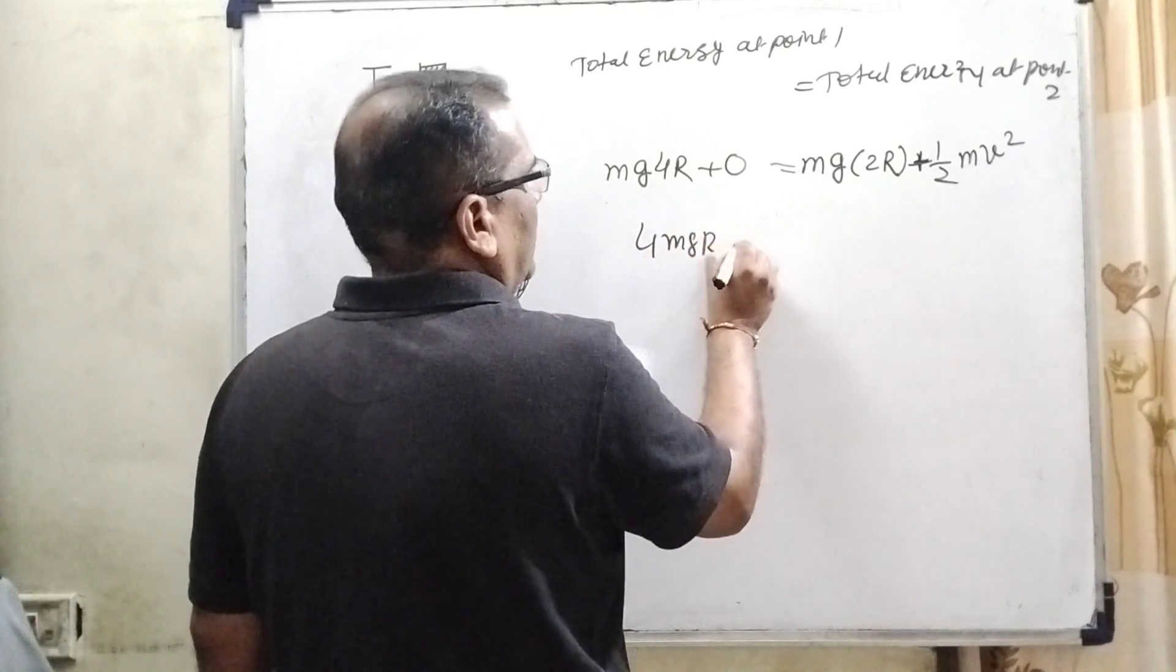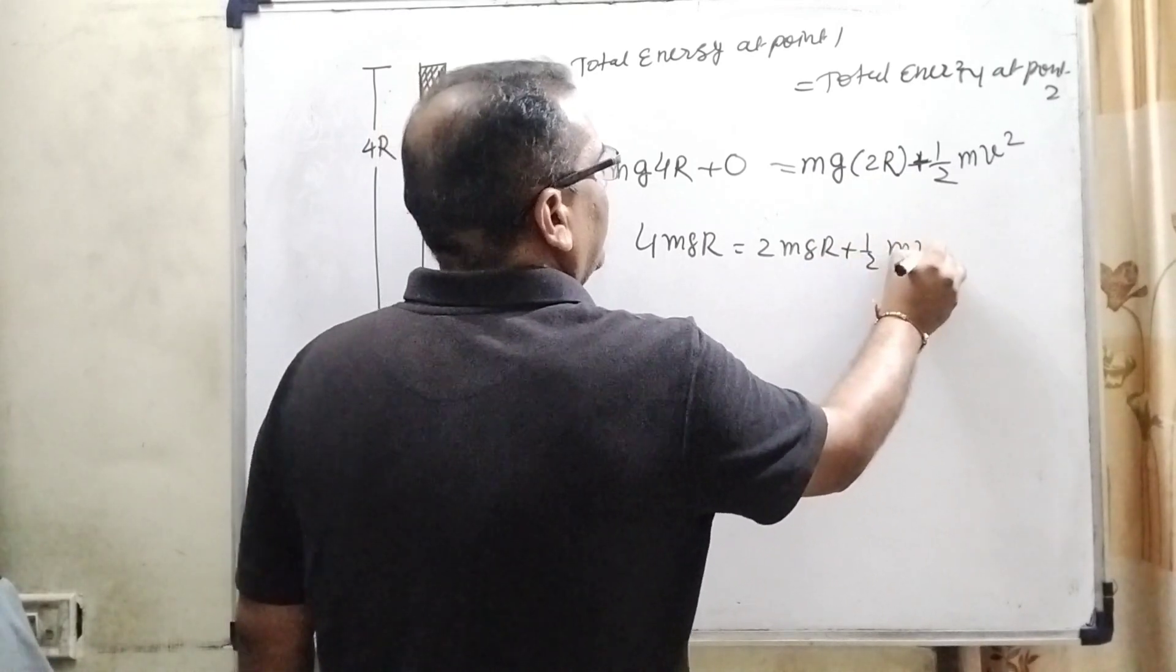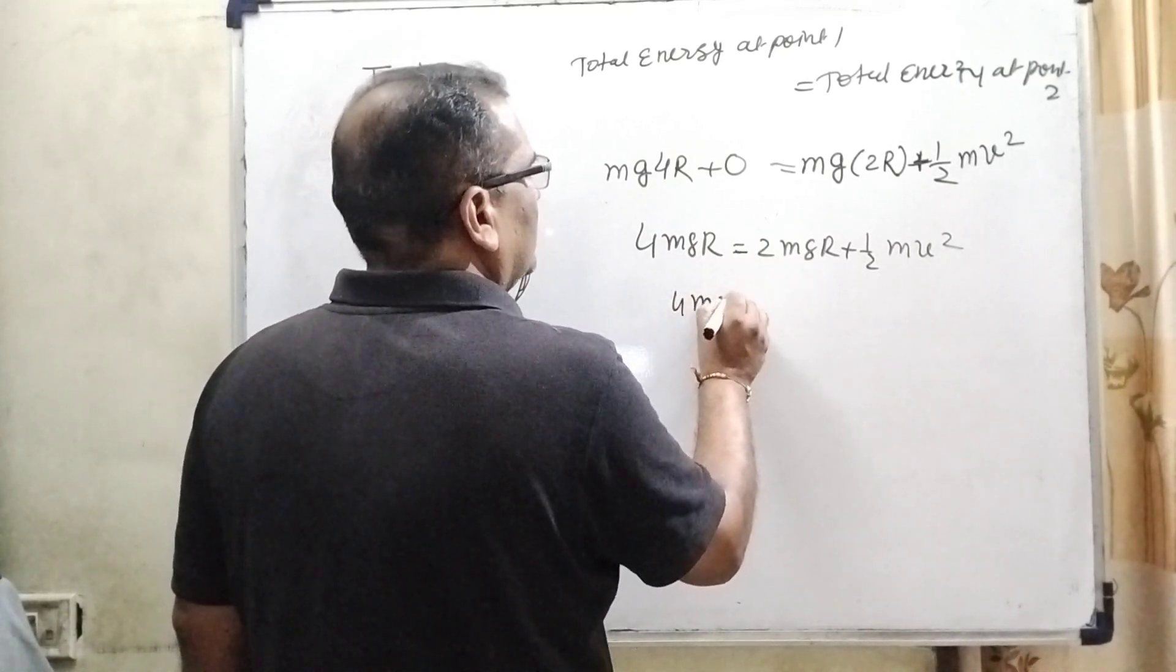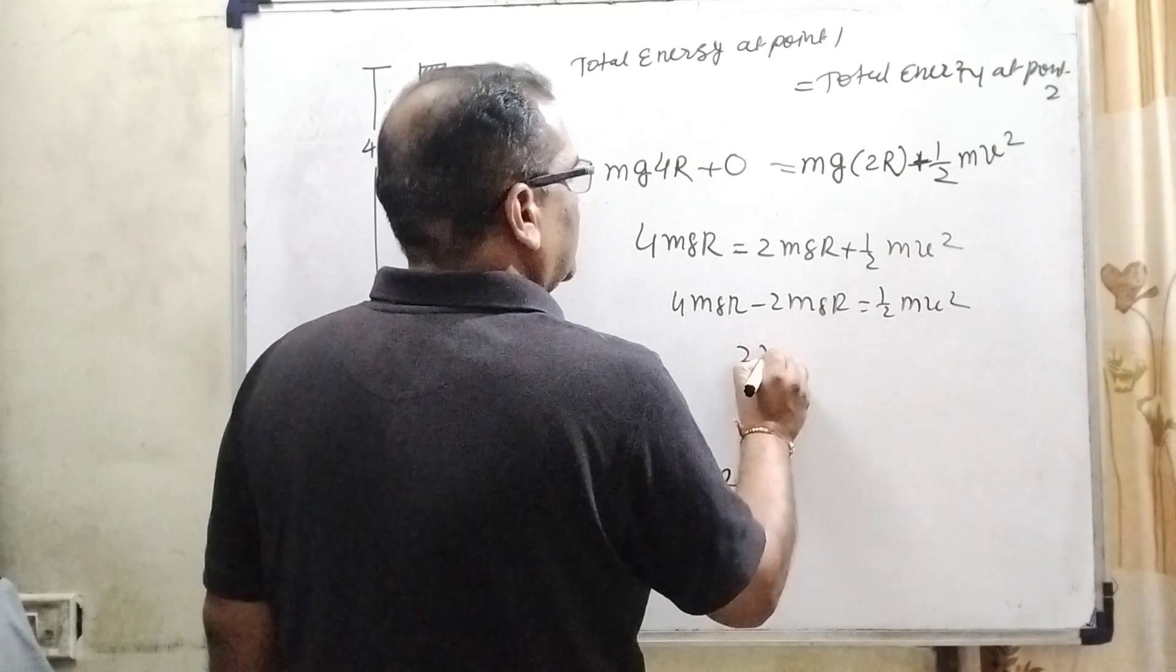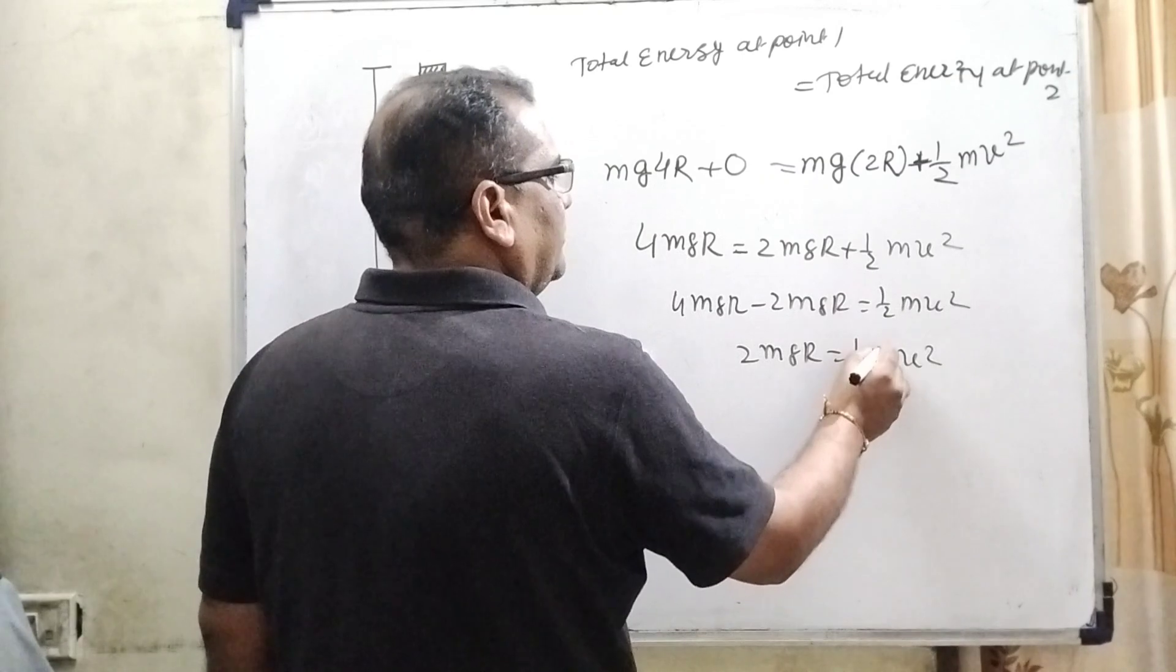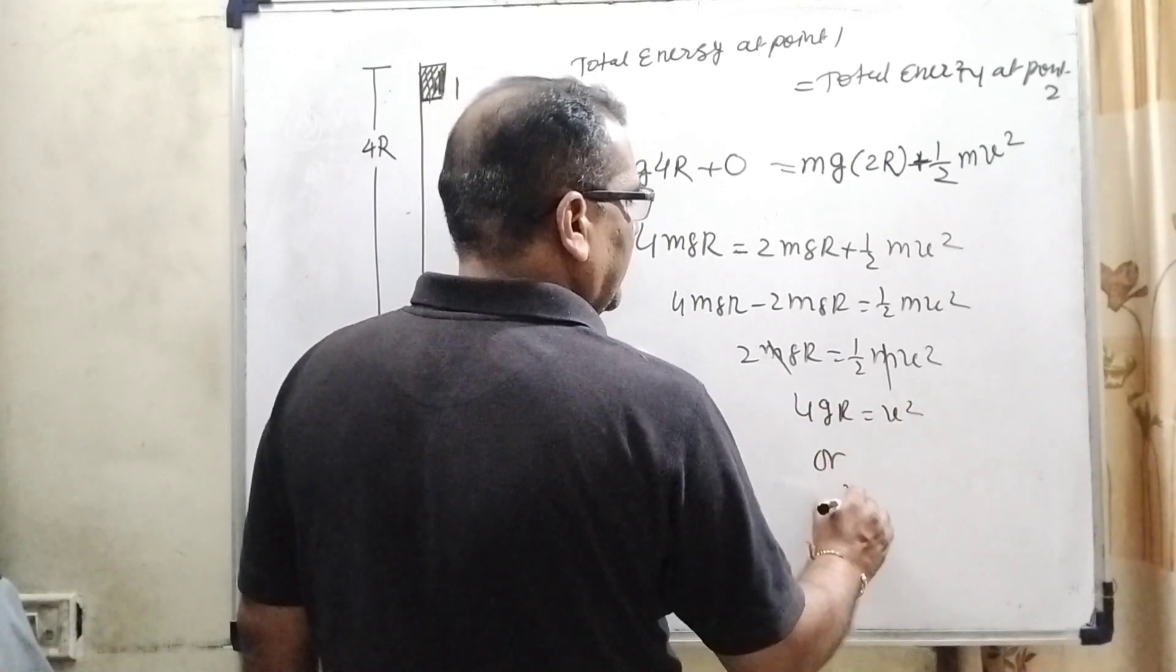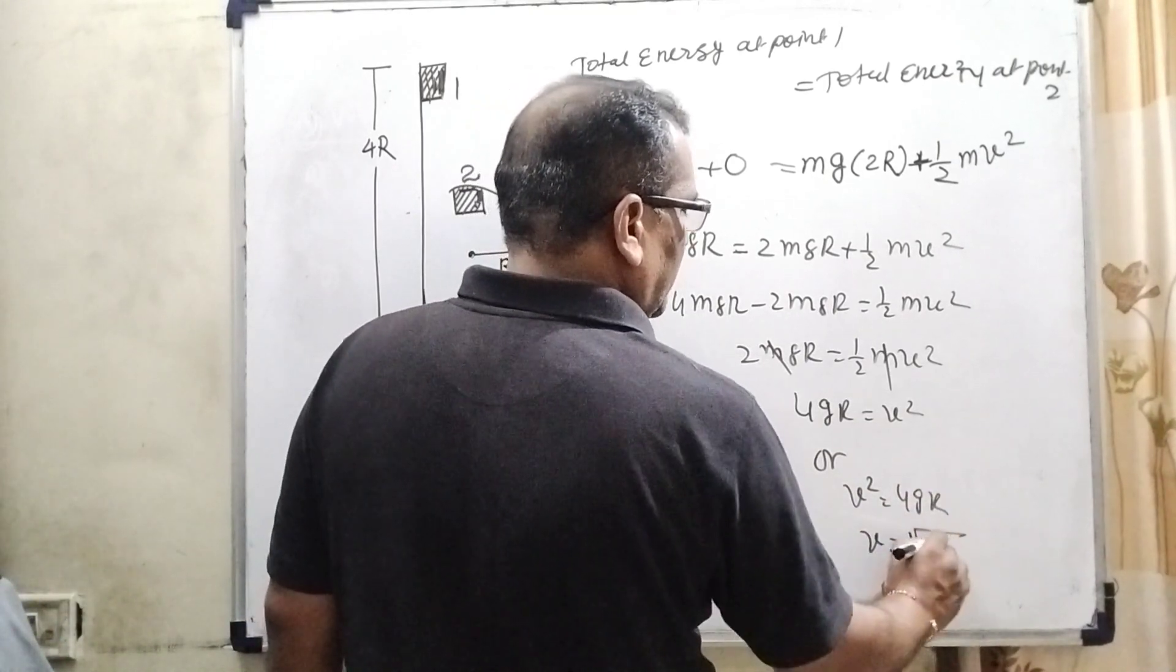So, 4mgR equal to 2mgR plus 1 by 2 mv square. So, here 4mgR minus 2mgR, transposing this term is equal to half mv square. That is 2mgR equal to 1 by 2 mv square. Here, m, m cancel out. 2 to the 4gR equal to v square. Or it can be written as v square equal to 4gR.